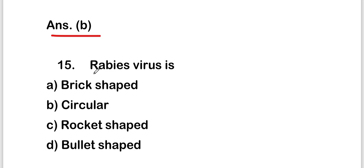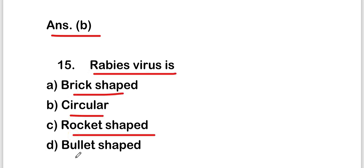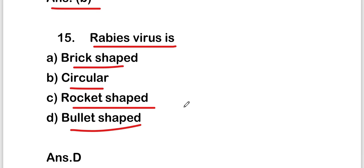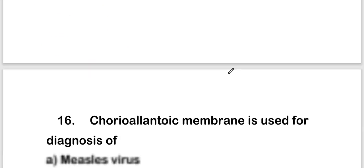The next question is: rabies virus is what shape — brick-shaped, circular, rocket-shaped, or bullet-shaped? The right answer is option D — rabies virus is bullet-shaped.